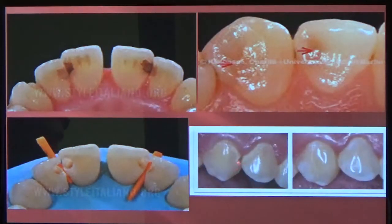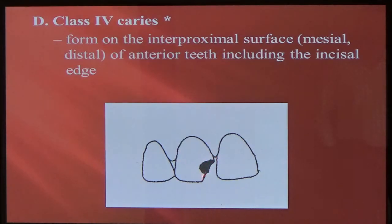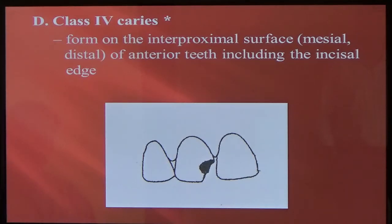Here's another one on this canine — class 3 — and there it is restored. Class 4: if the angle breaks, then it becomes a class 4, or if it's missing the angle. If you have a class 3 but the angle is gone, then it becomes a class 4. So it's a restoration including the proximal surface of anterior teeth, including the incisal mesial edge.